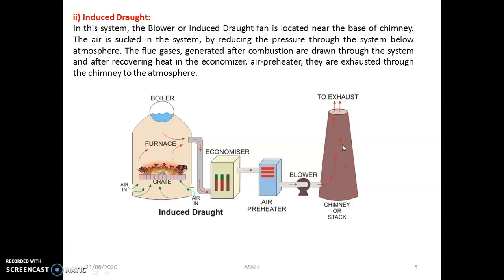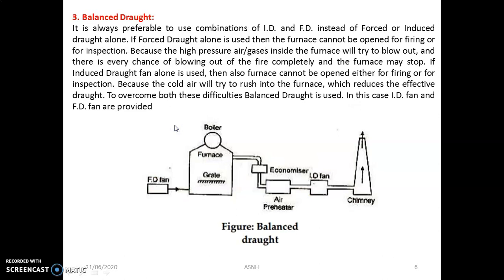The main difference between forced and induced draft is: in forced draft, the blower is placed in the furnace area and continuously blows air, pushing the flue gases in the forward direction. In induced draft, the blower is placed just before the chimney — the flue gases arriving from the air pre-heater level are poor in velocity, and the blower increases their velocity so they exit through the chimney.